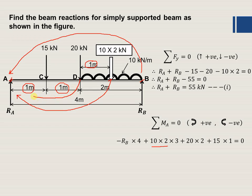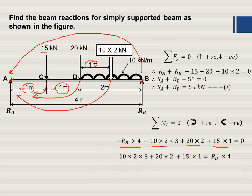The 20 kN point load also produces a clockwise moment about A. The perpendicular distance from point D to A is 1 plus 1 = 2 meters, so the moment is 20 into 2. Similarly, the 15 kN load produces a clockwise moment about A; the perpendicular distance from C to A is 1 meter, so the moment is 15 into 1. All three are positive while RB produces a negative (anticlockwise) moment.